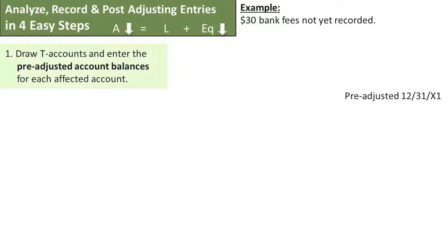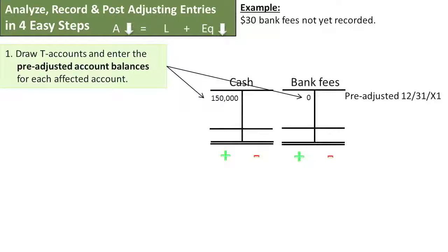Step 1. Draw T-accounts that represent the ledgers and enter the pre-adjusted account balances for each affected account. These balances came from the pre-adjusted trial balance and I've entered them here for you to save you a little time.